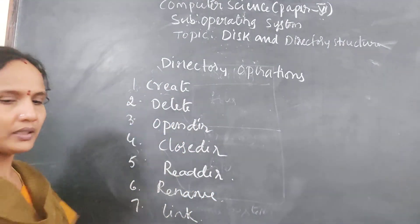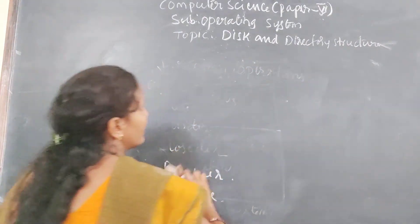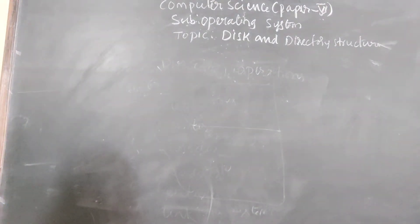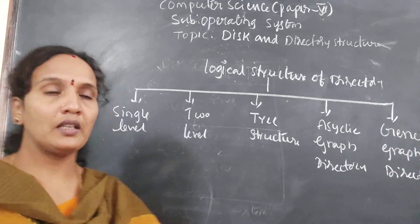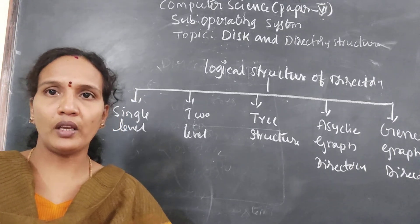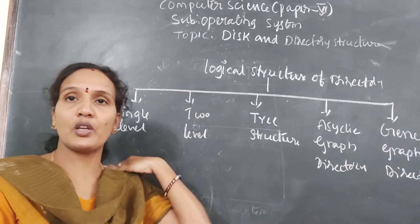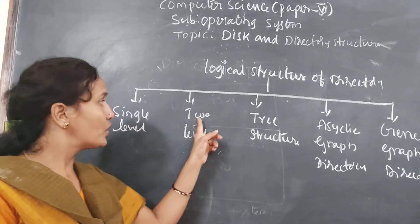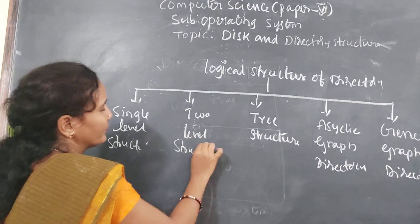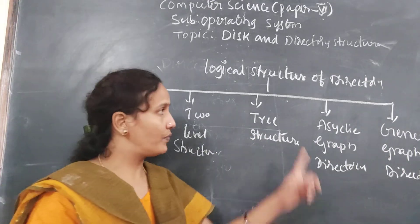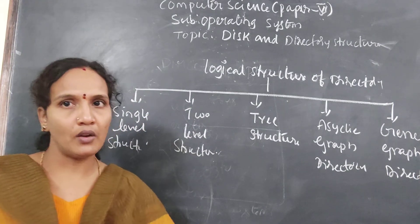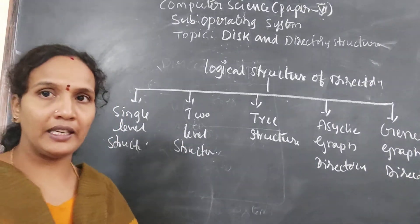Now we will discuss about the different structures of a directory — how many structures we have. Here we will discuss about the different logical structures of a directory. Logical structure means how the files are arranged. We have five types: single level structure, two level structure, tree structure, acyclic graph structure, and general graph directory. Take a screenshot of this, then we will discuss each category.